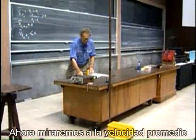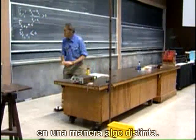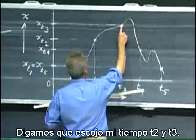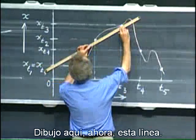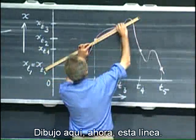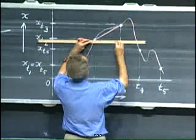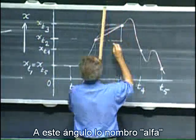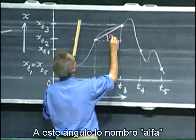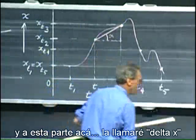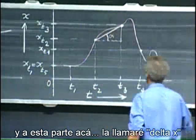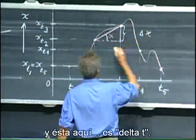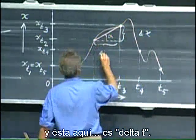And now we will look at the average velocity in a somewhat different way. Say I choose my time t2 and t3. I draw here now this line. And this angle I call alpha, and this part here I call delta x, and this here is delta t.